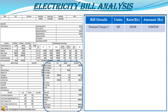Now the electricity bill calculation section. The first section is demand charges. The units are mentioned as 425 KVA because the contract demand is 500 KVA and the electricity company charges 85% of contract demand, which is 425 KVA. The rate per unit is 265 rupees per KVA. So 425 multiplied by 265 gives a total amount of 1,12,625 rupees. This is a fixed charge every month — whether you use electricity or not, you have to pay 1,12,625 rupees because you applied for 500 KVA as contract demand.